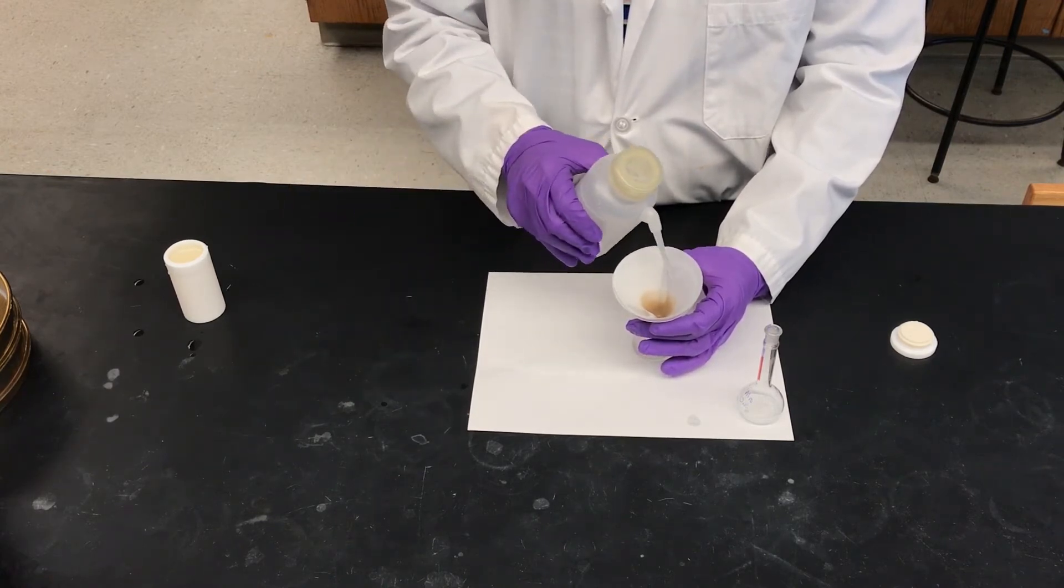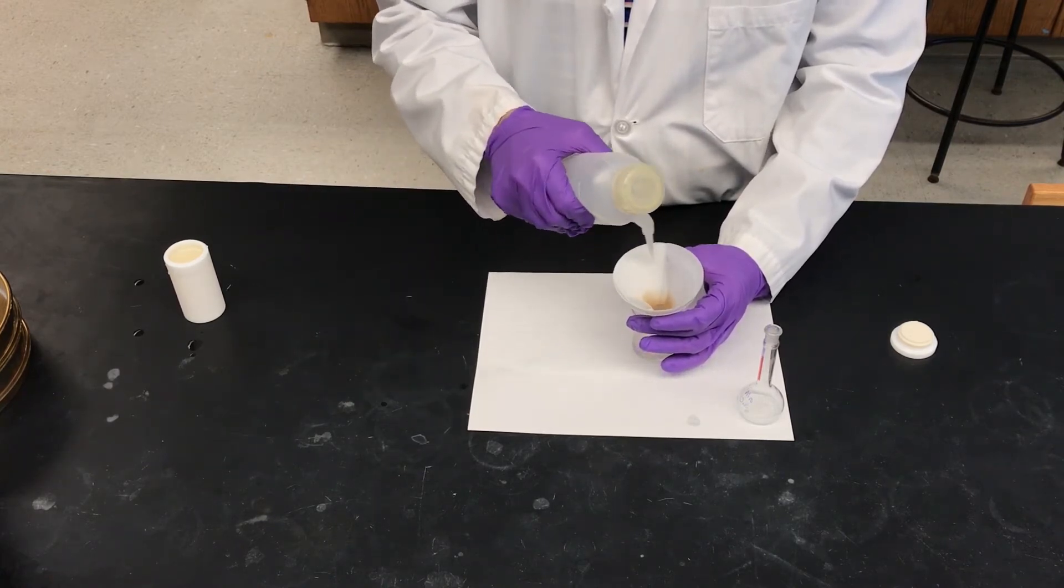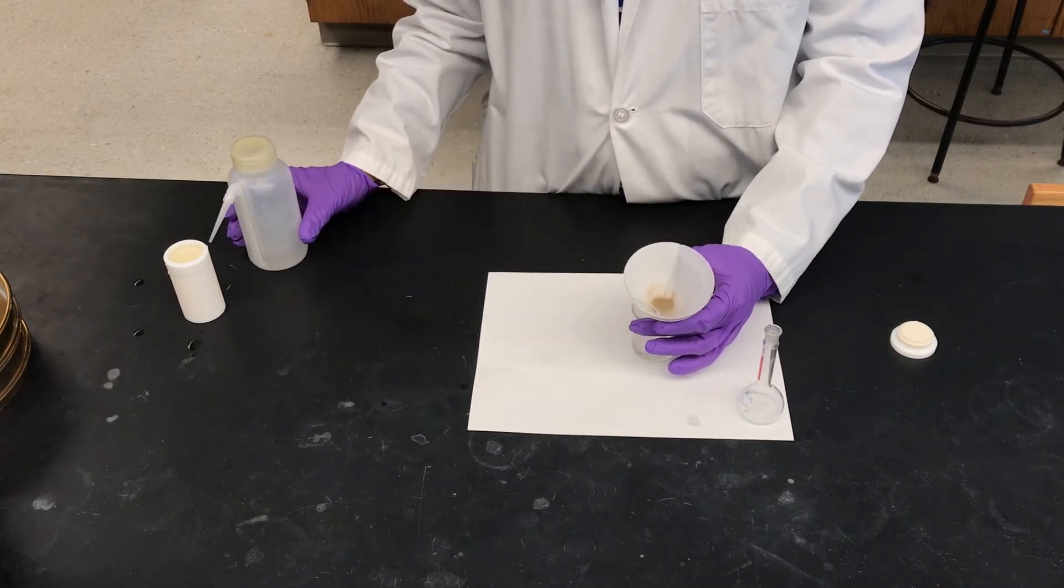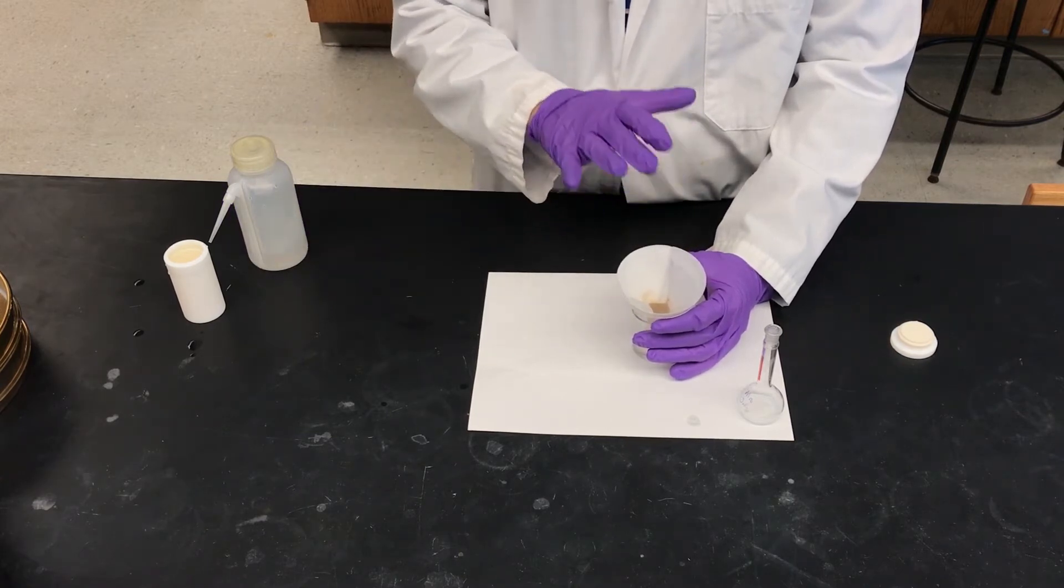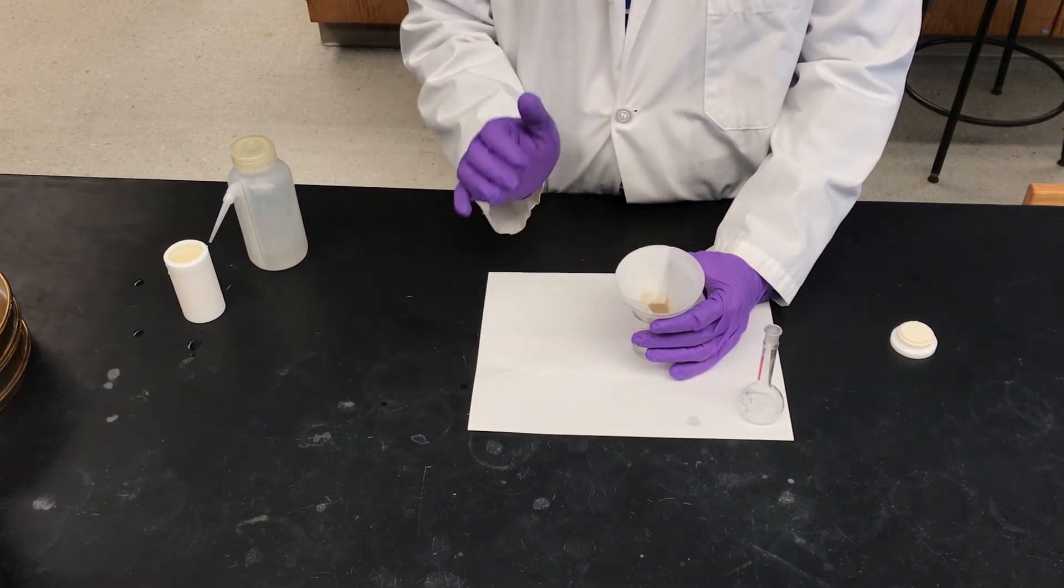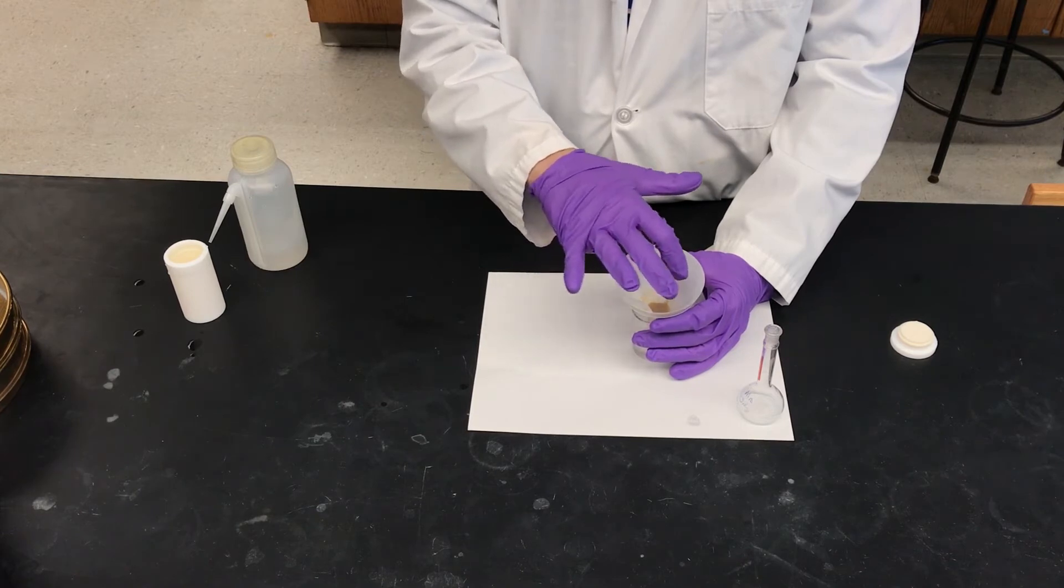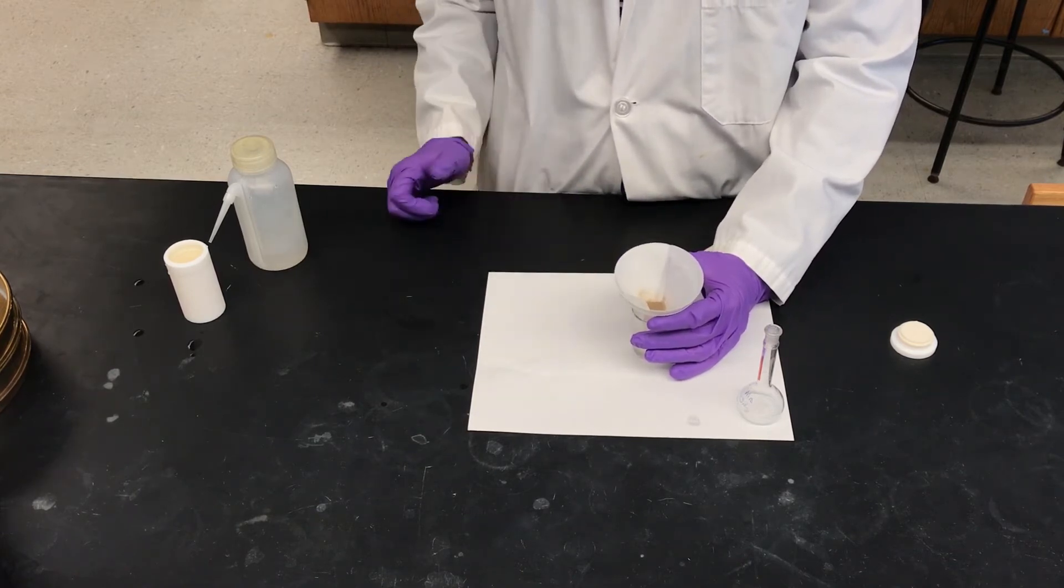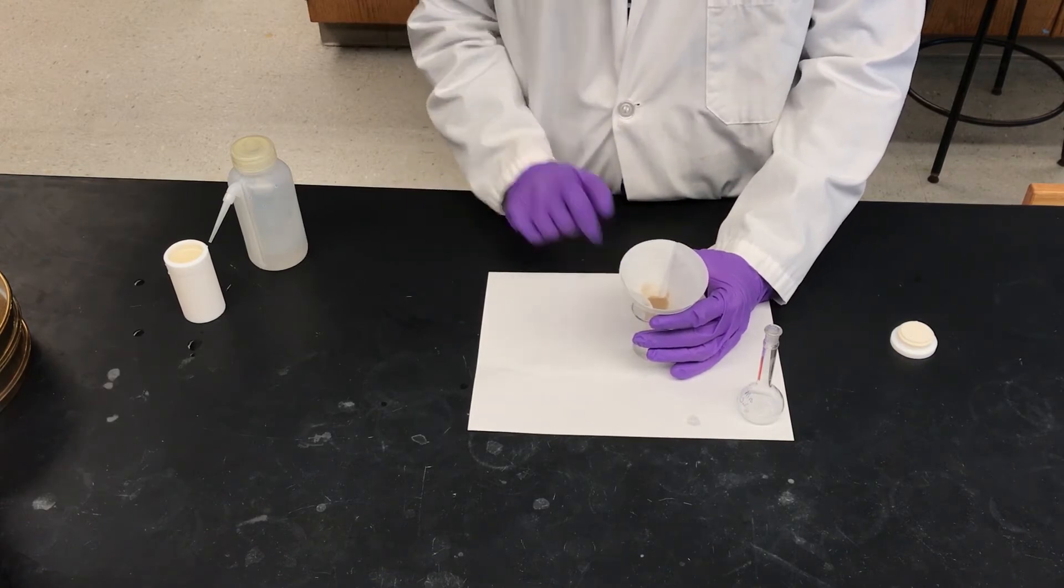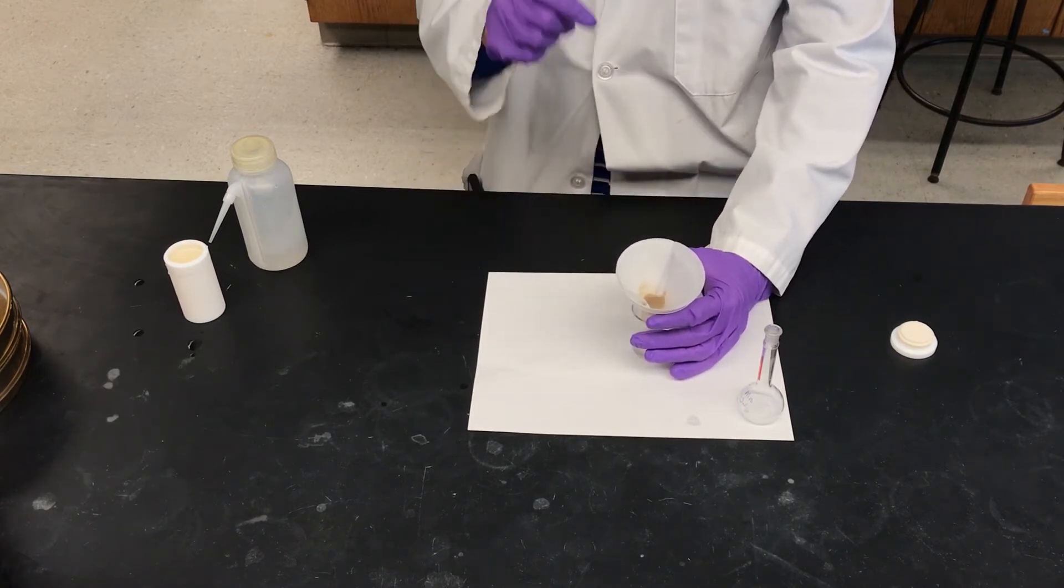So the next thing we're going to do is rinse our filter paper. And again, just use small amounts. We're going to do this twice. And this just ensures that if there is any analyte left in the soil part, the undigested soil or if it's within the filter paper itself, it's all funneled and we get it into the solution that we are going to put in our volumetric flask.